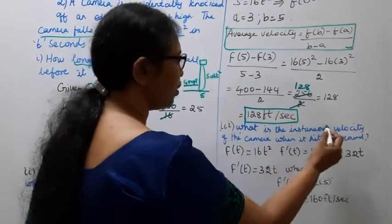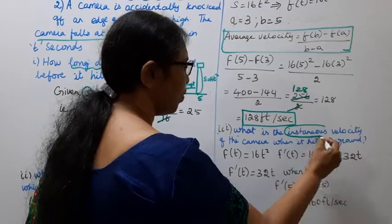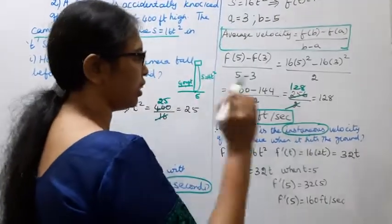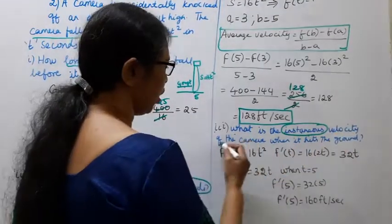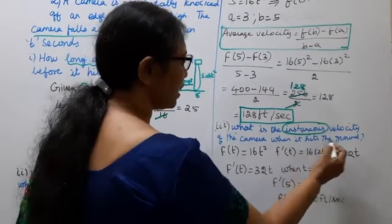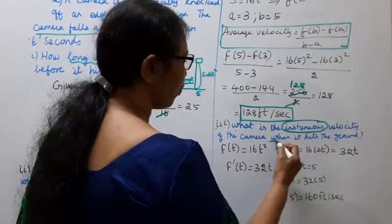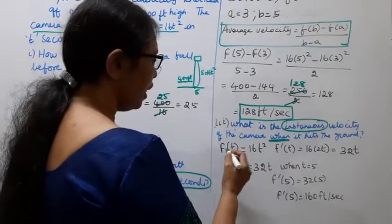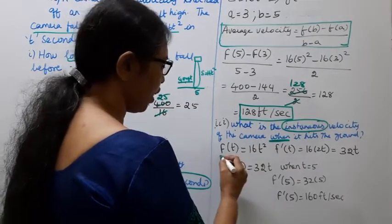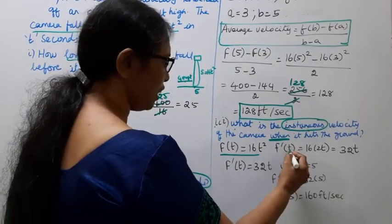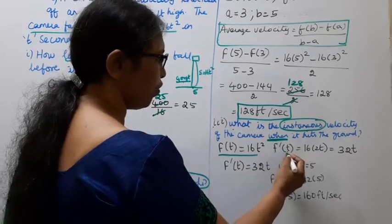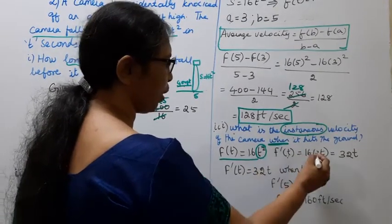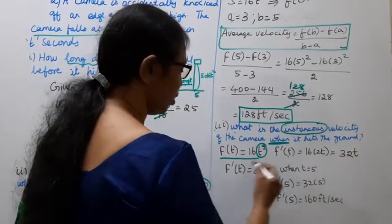Third sub-question: what is the instantaneous velocity of the camera when it hits the ground? We need to differentiate f(t). f dash of t — differentiating 16t squared gives 2t, so f dash of t equals 32t.